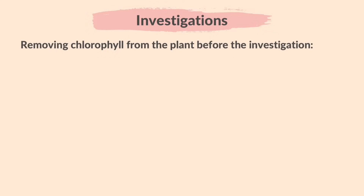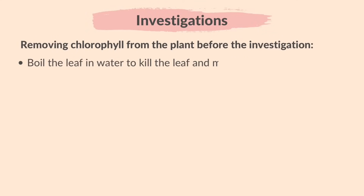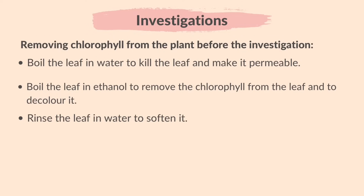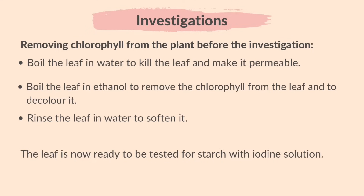These are the steps to remove chlorophyll. Boil the leaf in water to make it permeable. Boil the leaf in ethanol to remove the chlorophyll from the leaf and to decolor it. Rinse the leaf in water to soften it. The leaf is now ready to be tested for starch with iodine solution.